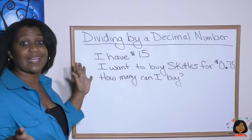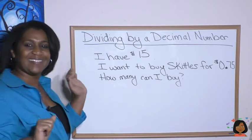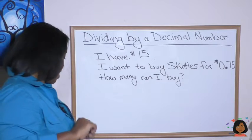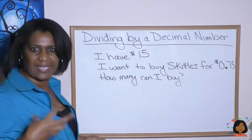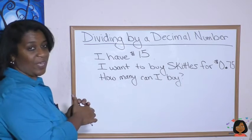Well, first of all, I don't know any place that actually sells Skittles for 75 cents. So if you find it, buy it. But let's just say that's part of the problem. Somebody really has them for 75 cents. Well, it's a word problem, right? It's an equal groups word problem.